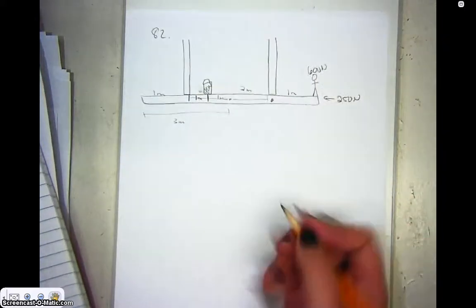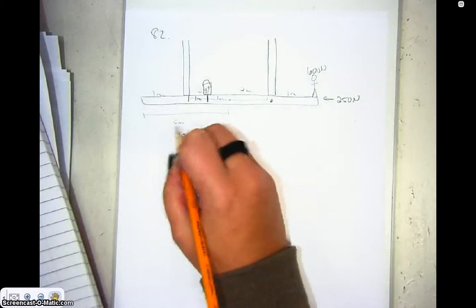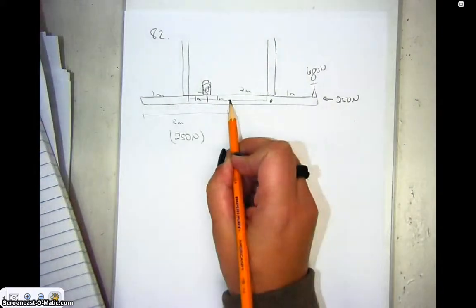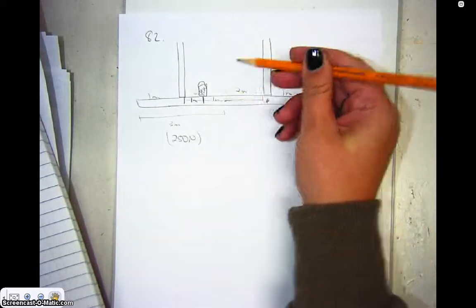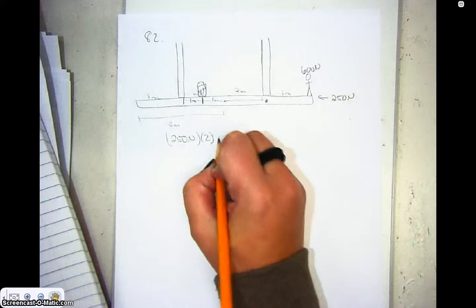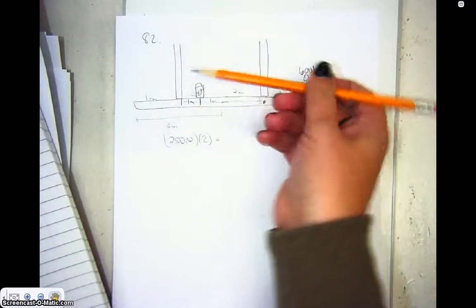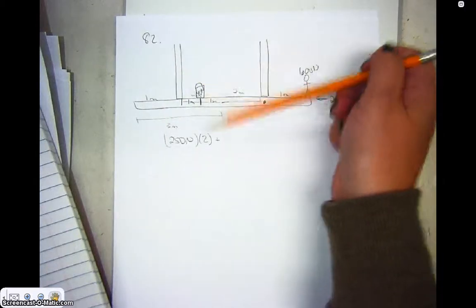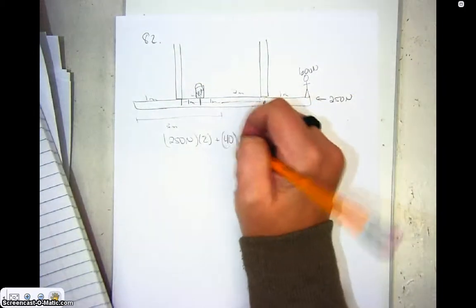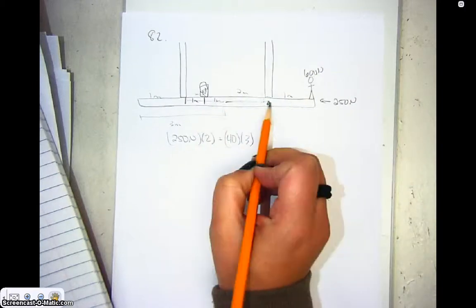So we are hoping that if we take 250 newtons for the beam times the distance from the pivot point, which it would be tilting upwards like this, times 2, plus we've got the bucket here that's going to have a downward force like this relative to this. So times 40 newtons times its 3 meter distance away from the pivot point.